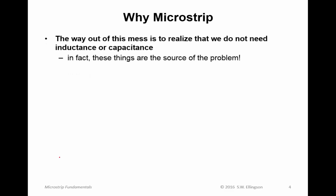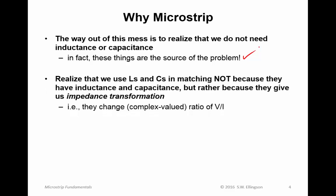So, why microstrip? The way out of this mess is to realize that we don't actually need inductance or capacitance — these things are the source of the problem. Inductance is simply the tendency of a device to store energy in magnetic fields, and capacitance is the tendency of a device to store energy in electric fields. We use L's and C's in matching not because they have inductance or capacitance, but because they give us impedance transformation — they change the complex value ratio of V to I, voltage to current. So we should ask ourselves what else allows us to change this ratio V to I and thereby affect impedance transformation.